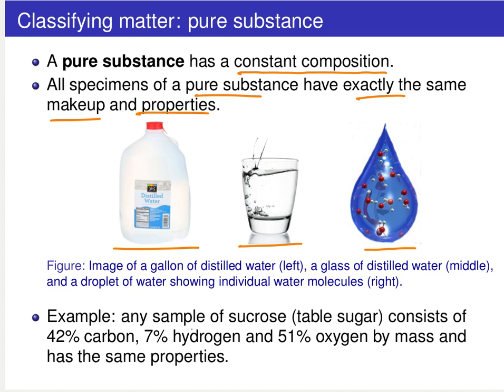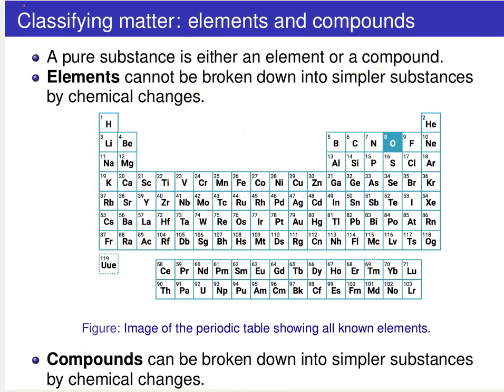Another example we can look at would be, for example, sucrose, which is just table sugar, the type of sugar you put in your tea. This table sugar sucrose sample consists of 42% carbon atoms, carbon building blocks, 7% hydrogen building blocks, and 51% oxygen building blocks by mass. So anytime you have a sample of sucrose, you have this relative proportion of different types of building blocks, and you're going to have the exact same properties. So you have, once again here, a pure substance. But of course, this pure substance sucrose has very different properties than the pure substance of water.